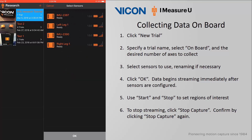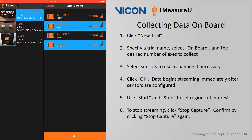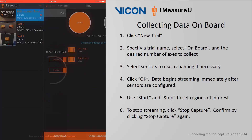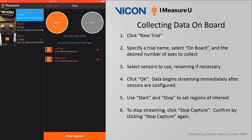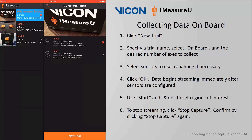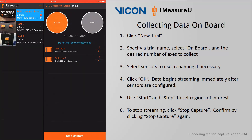I will once again be prompted to select the sensors I want to use, so I will select Left Leg 1 and Right Leg 1 from before. As soon as I click OK, synchronization information is being sent to the iOS device. When the sensor configuration is complete, data immediately begins recording to the internal sensor memory. This will bring you to a new screen with a Start and Stop button. These buttons allow a user to set epochs, or a region of interest, within the trial. Remember that you can record two trials concurrently when saving data onboard. I will click on the trial name and then click Start to begin my region of interest.